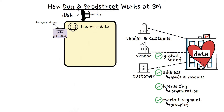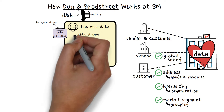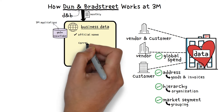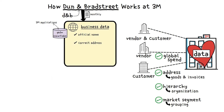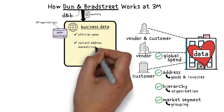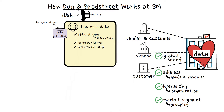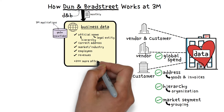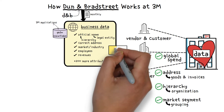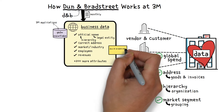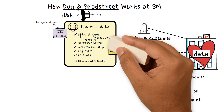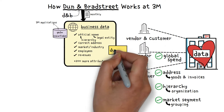This information includes things like the business's official name, the correct address with consistency in any abbreviations, and also things like what type of market or industry the business is in, the legal entity name for the company, corporate hierarchies, the number of employees, annual revenues, and so much more. In fact, there are more than 200 additional business attributes that are available for use once the company is linked to a Dun & Bradstreet master ID.